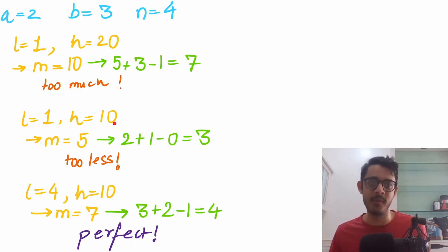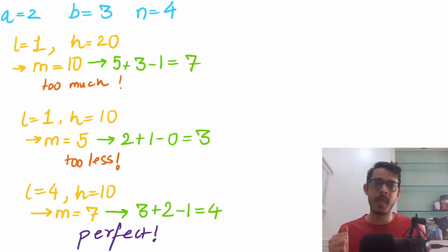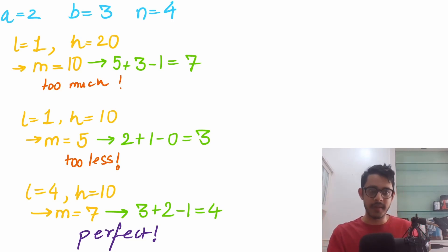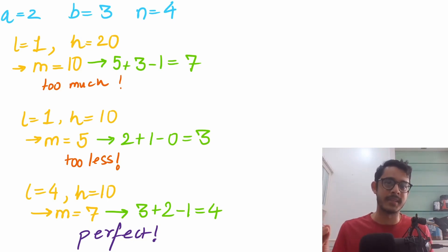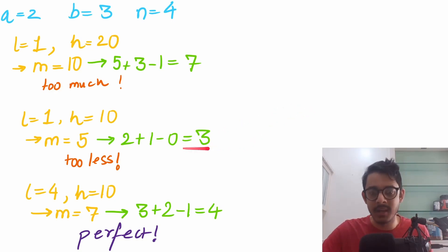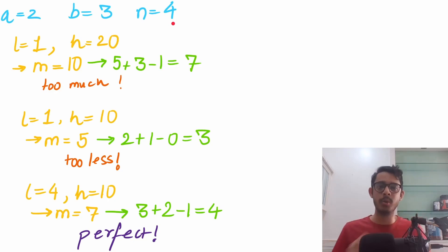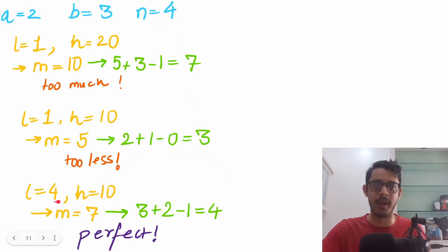Now low=1, high=10. Mid = (1+10)/2 = 5. Position of 5: floor(5/2)=2, floor(5/3)=1, floor(5/6)=0, so position = 2+1−0 = 3. Since 3 < 4, set low = mid+1 = 4. Then mid = (4+10)/2 = 7. Position of 7: floor(7/2)+floor(7/3)−floor(7/6) = 3+2−1 = 4. This is exactly n=4!